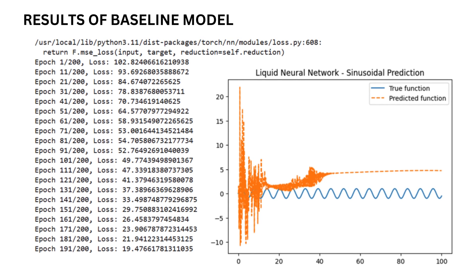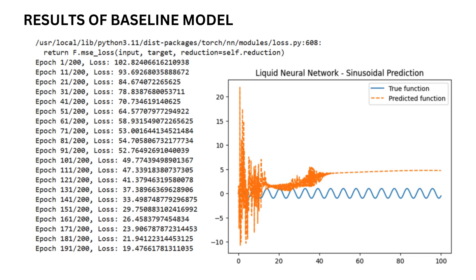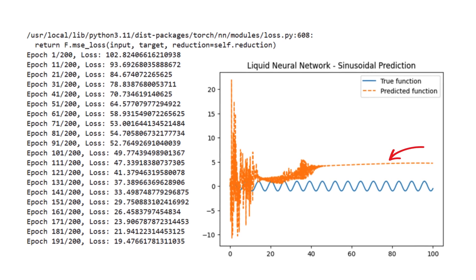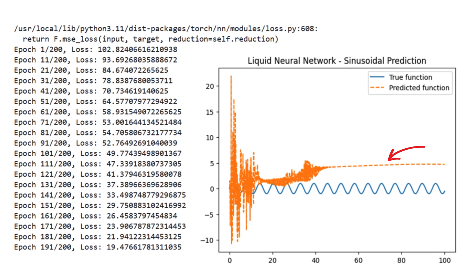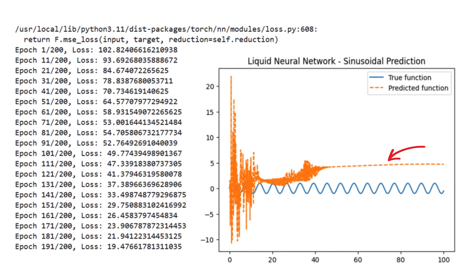In this plot you will see the true sine function and the model's predictions. As training progresses, the loss decreases, meaning the model is getting better at approximating the sine wave. The beauty of inductive learning here is that the LNN isn't memorizing the data points — it's learning the underlying pattern of how the data behaves, which it can then use to predict new data points. After 200 epochs the results were not that accurate, so we're increasing the number of epochs to 350.